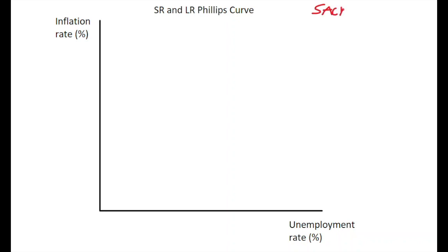The sacrifice ratio is the ratio that authorities need to look at when they are trying to pursue contractionary monetary policy and stabilize inflation in the economy. We're going to look at the model of a Phillips Curve where we have a long-run Phillips Curve and some short-run Phillips Curves as well.